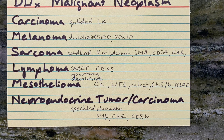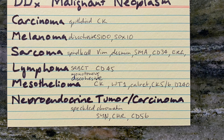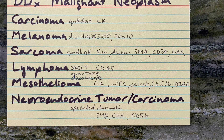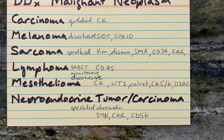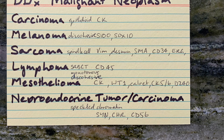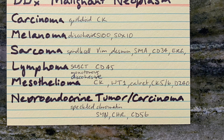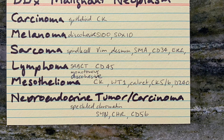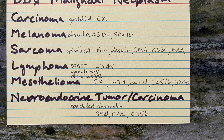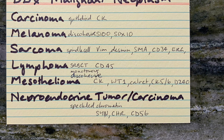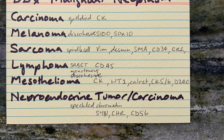Mesothelioma may be epithelioid or spindle cell or both. They stain positive with cytokeratins, WT1, Calretinin, CK5/6, and D2-40.